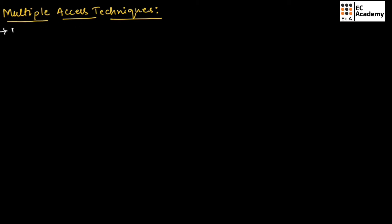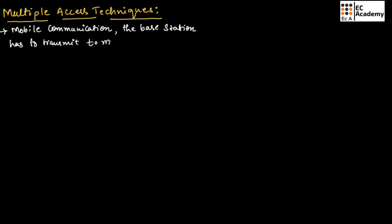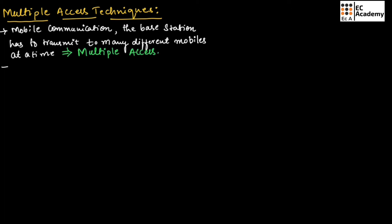In mobile communication or cellular communication, the base station has to transmit to many different mobiles at a time. This process is known as multiple access. Multiple access is achieved by sharing the resources of the air interface.